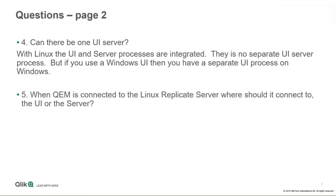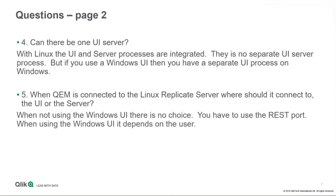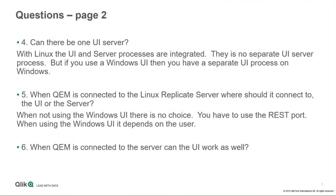When Enterprise Manager is connected to the Linux Replicate server, where should it connect — the UI or the server? If you're not using the Windows UI, there's no choice — there's only one place to connect. Use the REST port. When using the Windows UI, you can connect to either the Windows UI or directly to Linux, but if the admin password is kept secret, you can only connect to the Windows UI. Final question: when Enterprise Manager is connected to Linux, can the UI work as well? Yes — Enterprise Manager is just another consumer, so you can have people connecting to the UI as well.